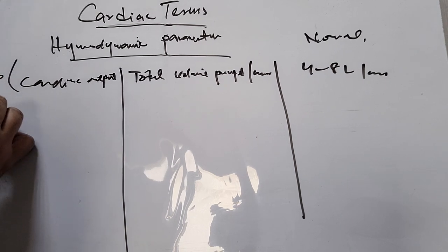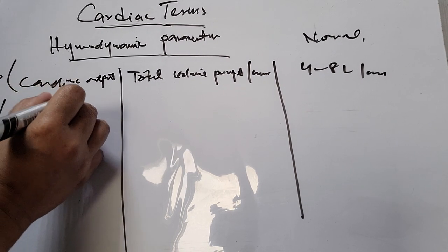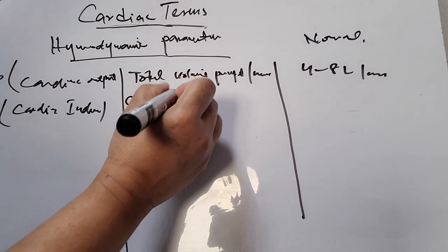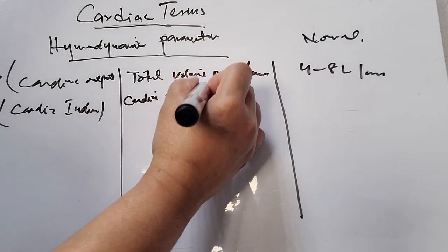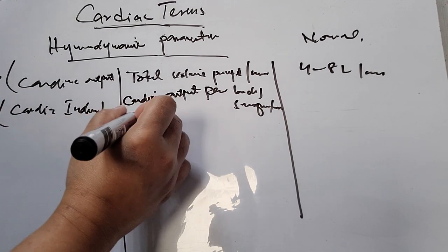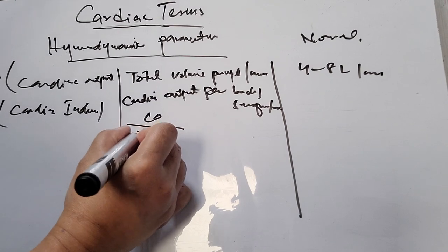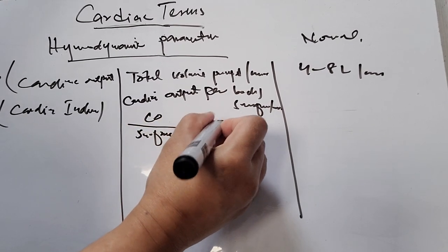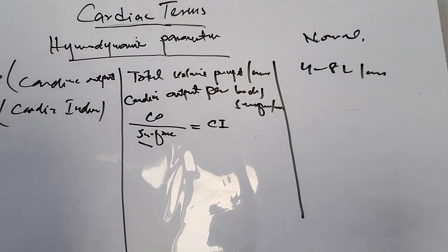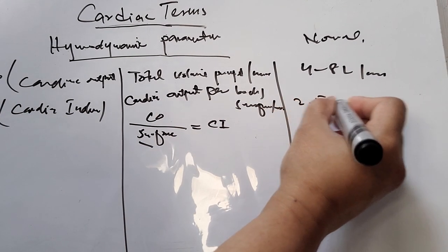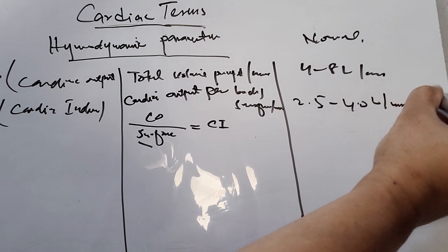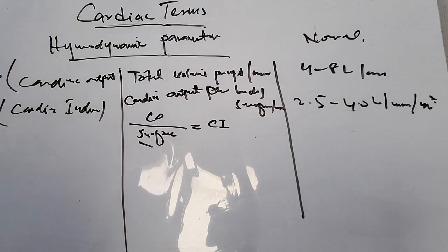The next is CI — cardiac index. What is cardiac index? It is cardiac output per body surface area. The formula is: CO divided by surface area equals CI. The normal range is 2.5 to 4.0 liters per minute per meter squared. This is the normal value of the cardiac index.